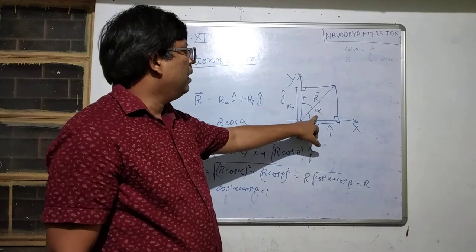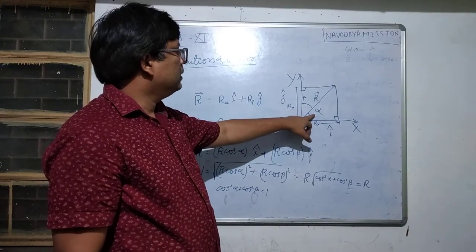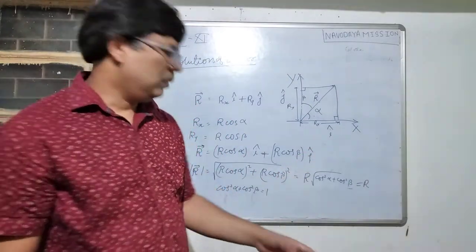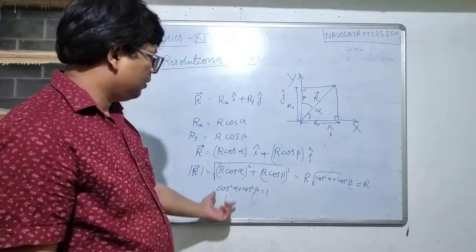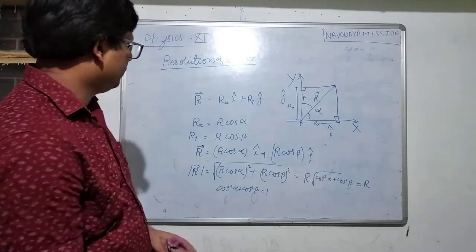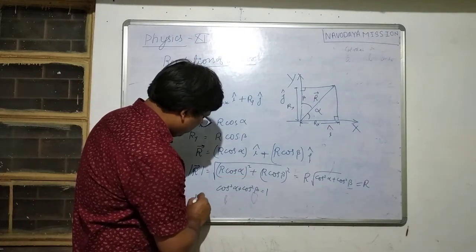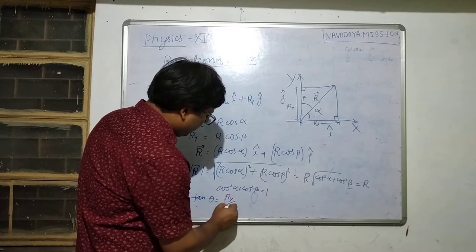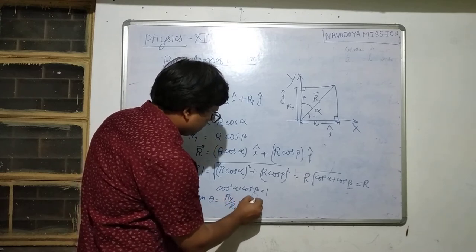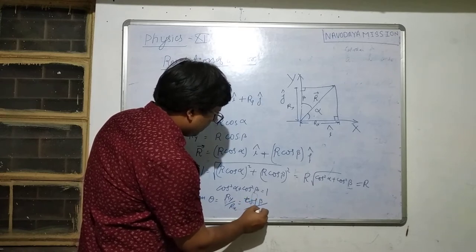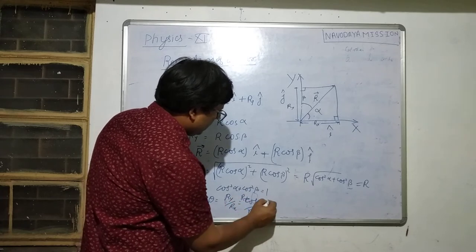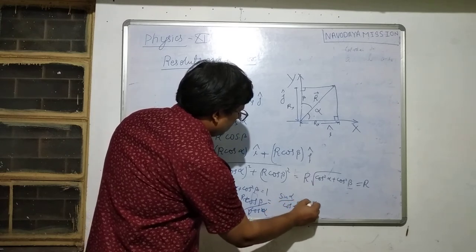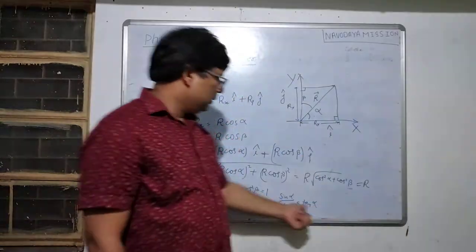Here cos α and cos β are the direction cosines. Since beta = 90° − alpha, we have cos β = sin α, so cos²α + sin²α = 1, which confirms cos²α + cos²β = 1. Also, tan θ = Ry/Rx = cos β / cos α = sin α / cos α = tan α, confirming that alpha equals theta.